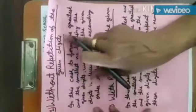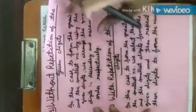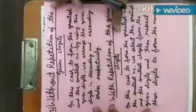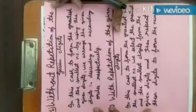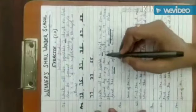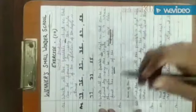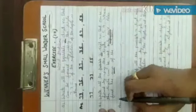Without repetition of the given digit, in this case to form the greatest and the smallest number by using the given digits, we arrange the given digits in descending and ascending order respectively. Now let's start — 2-digit numbers using 1, 5, and 9.